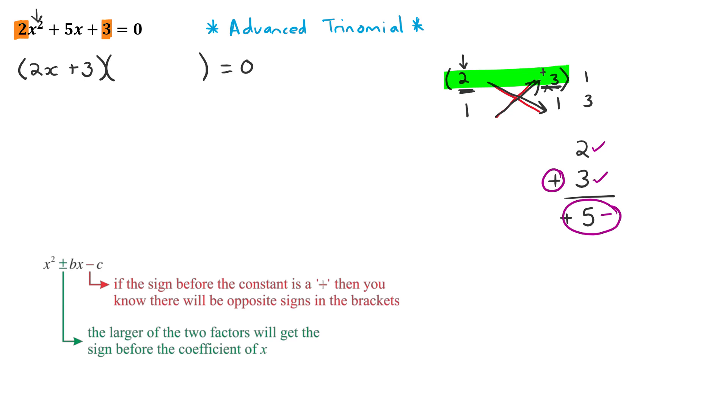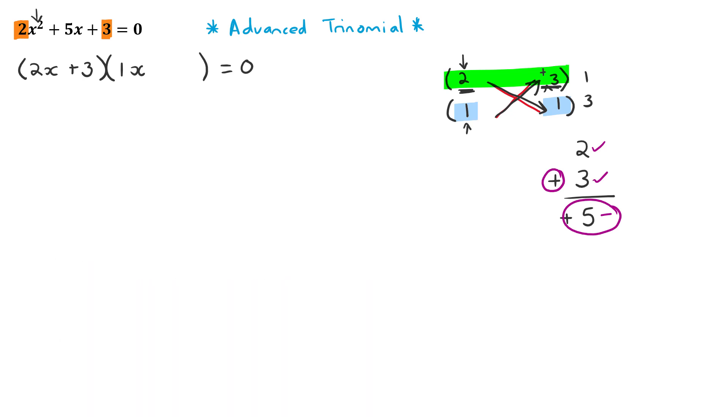Then for the second bracket, it will be the second piece down there, the 1 and the 1. So it would basically be 1 from over here, followed by an x plus 1 because that's a positive 1. But of course, you know that we don't need to write that 1 in front. So it becomes x plus 1.